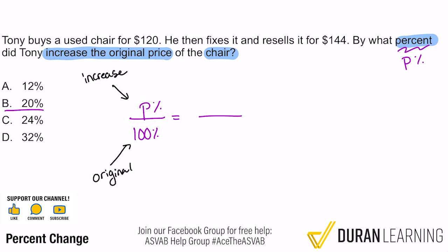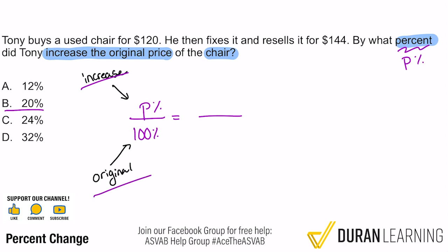Here's the cool thing about proportions — as long as you set it up the same way on both sides, you're fine. So if we're comparing percents to the actual price, we just make sure it matches up. The original is $120 — that's what he bought it for. And the increase is not $144; the increase is the difference between how much he sold it for and how much he paid. So 144 minus 120 gives us $24.